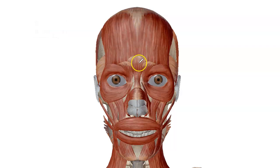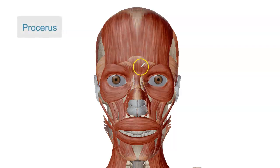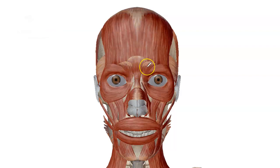Right below that we have a muscle at the bridge of the nose called the procerus muscle, and on both sides of that we have a muscle called the depressor supercilii.